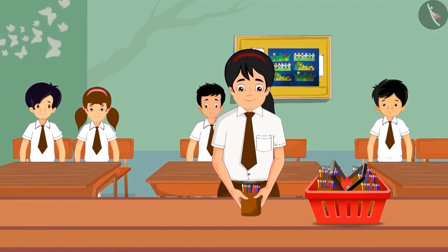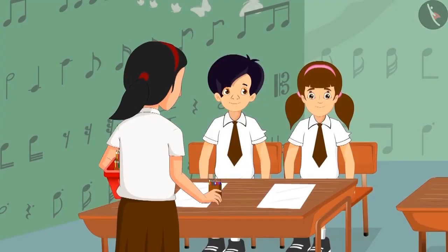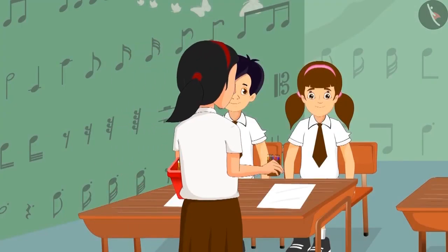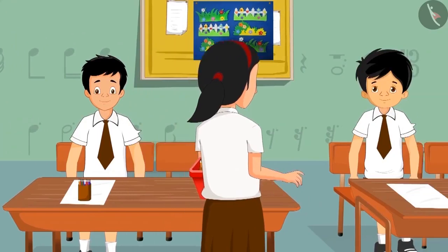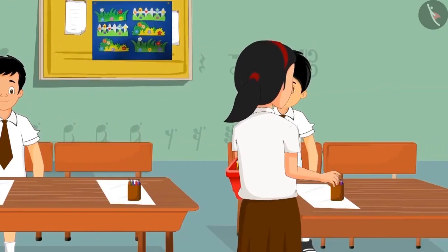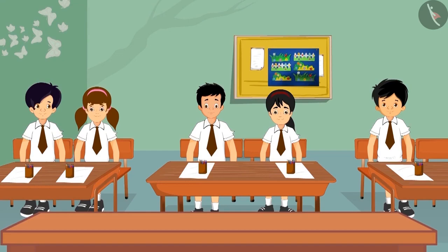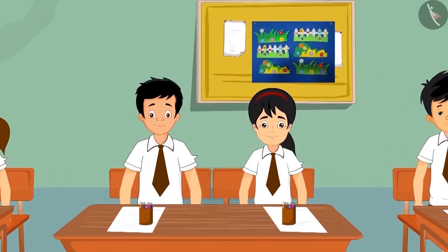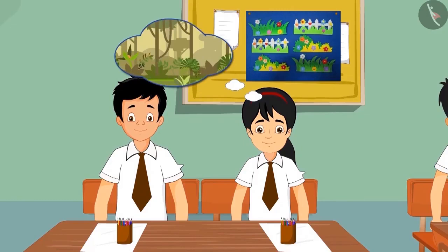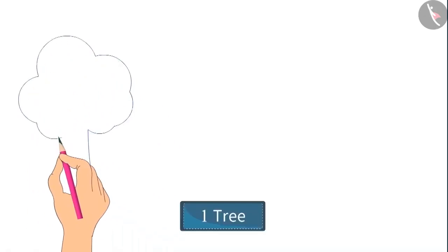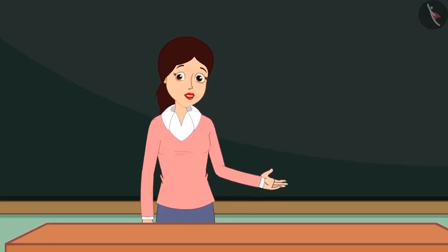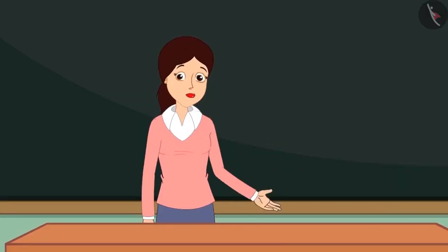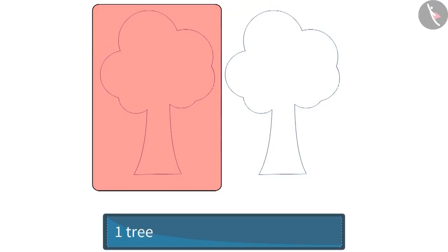At school too, Pinky helps her teacher. In today's art class she distributed color boxes to everyone. Today all students have to make a drawing of trees. Pinky thought of making a drawing of a jungle. At first she drew one tree, because she had to make a dense forest so she drew another tree.